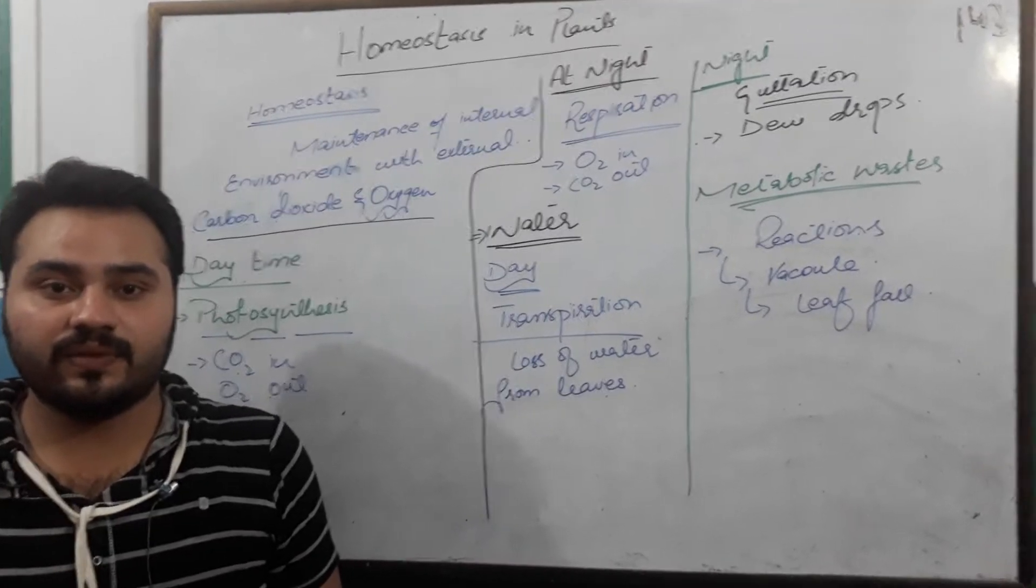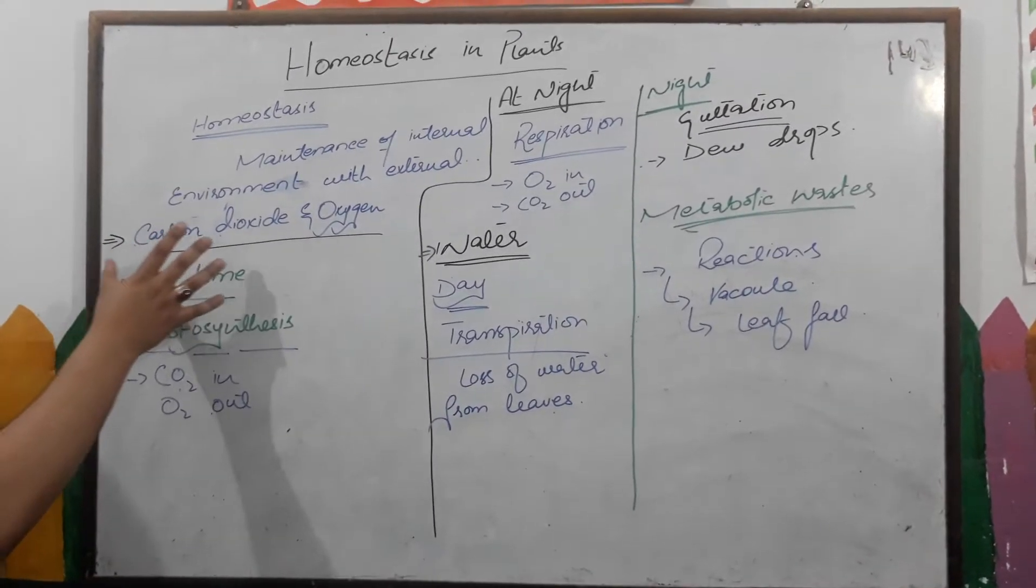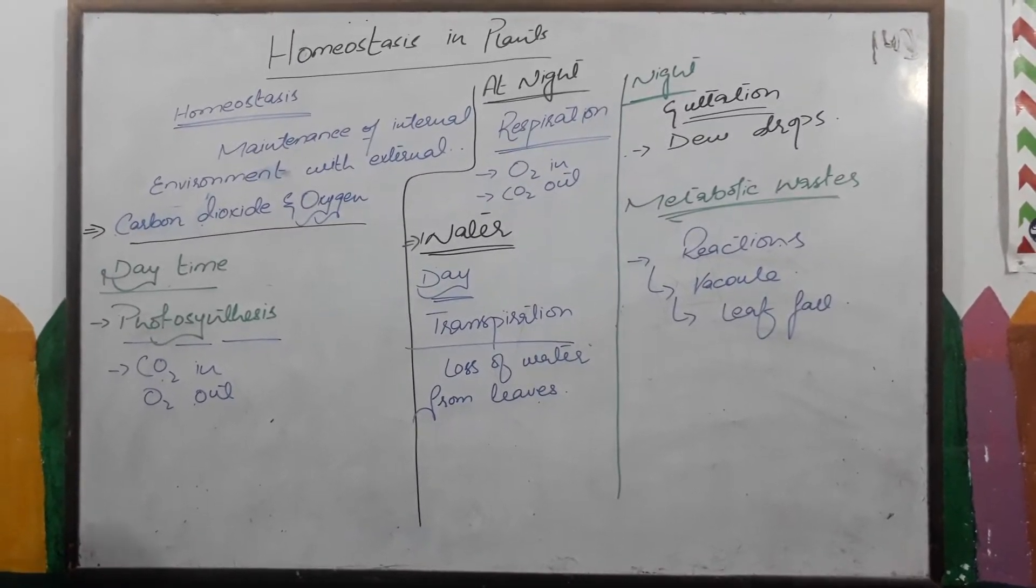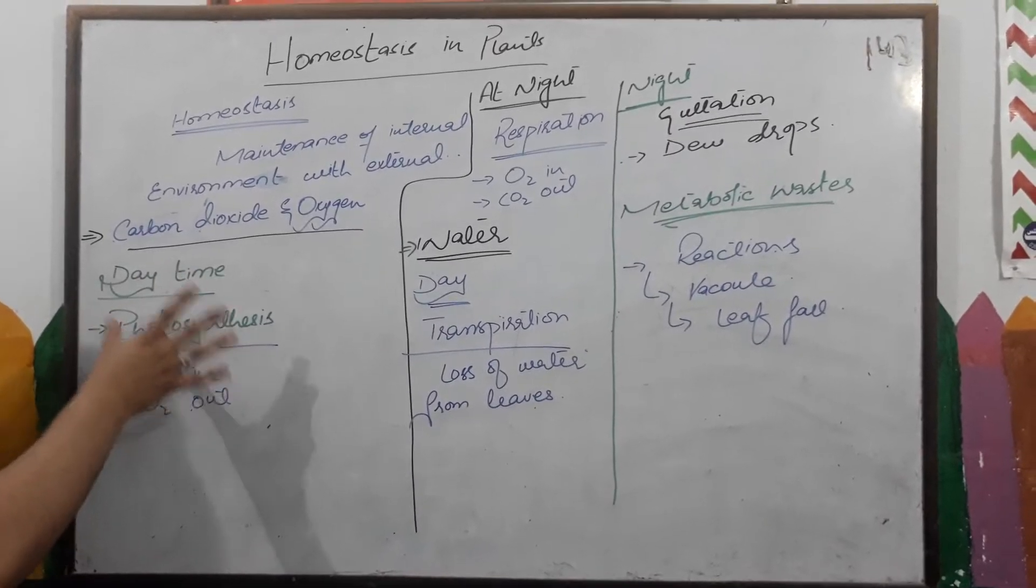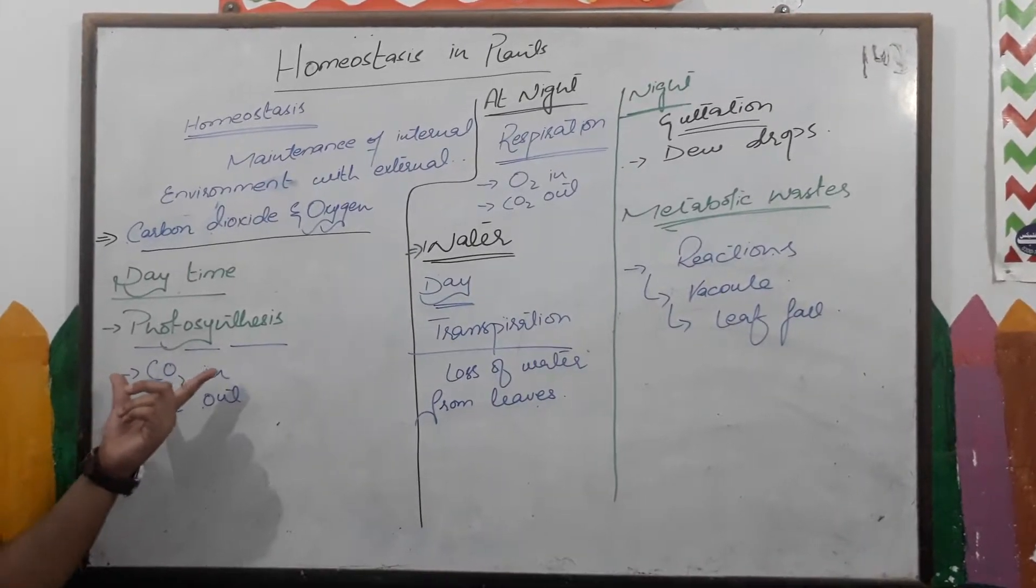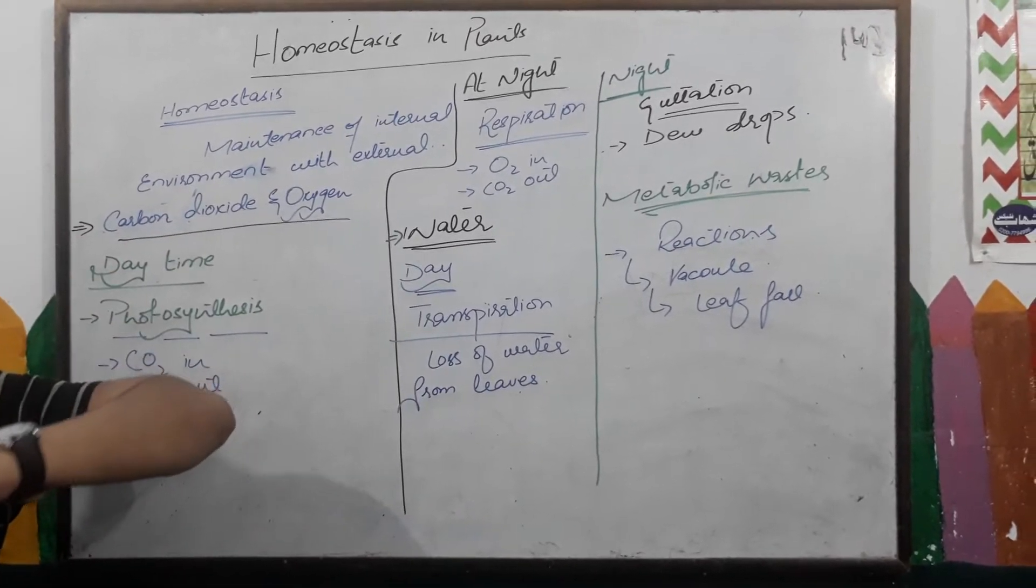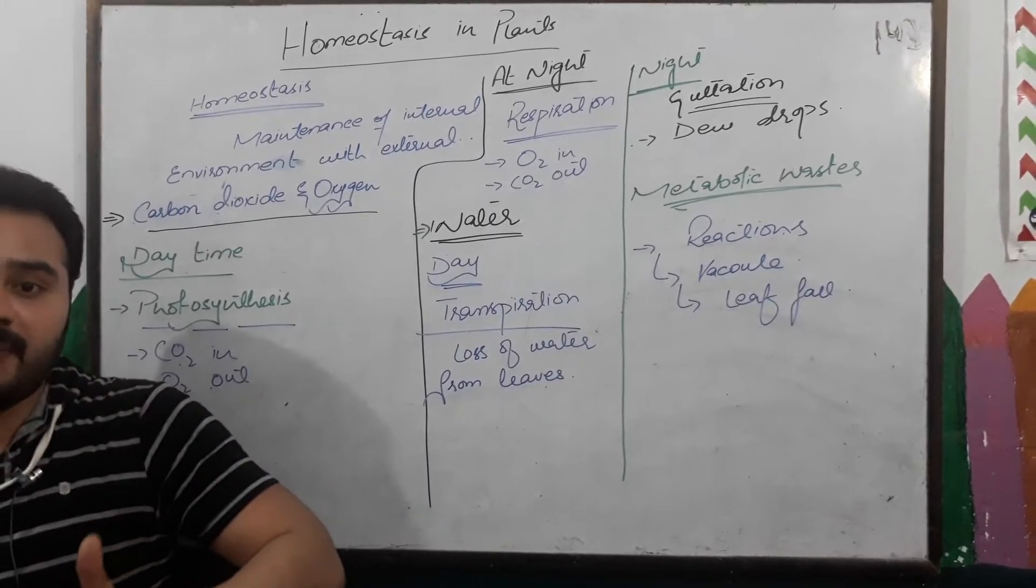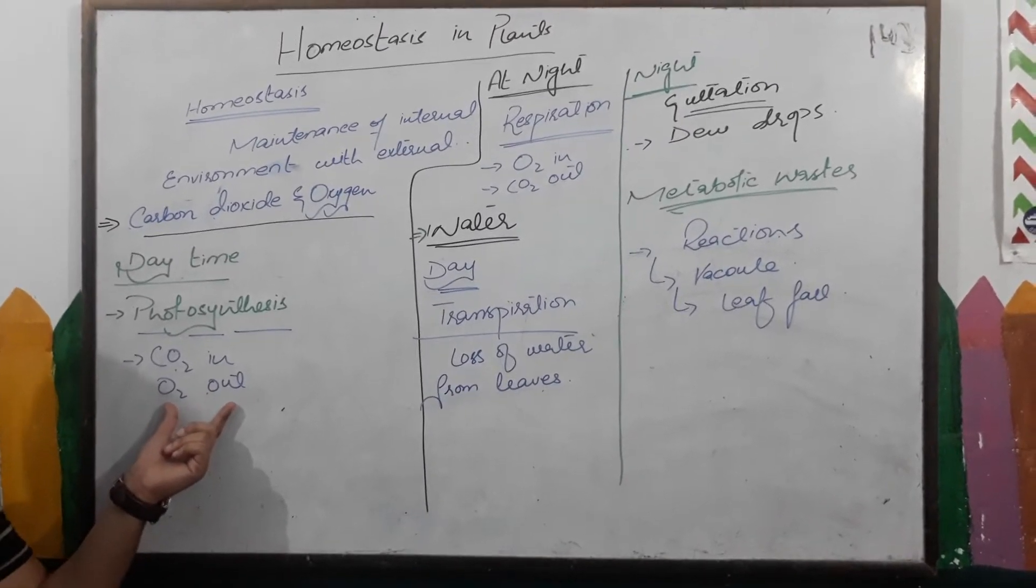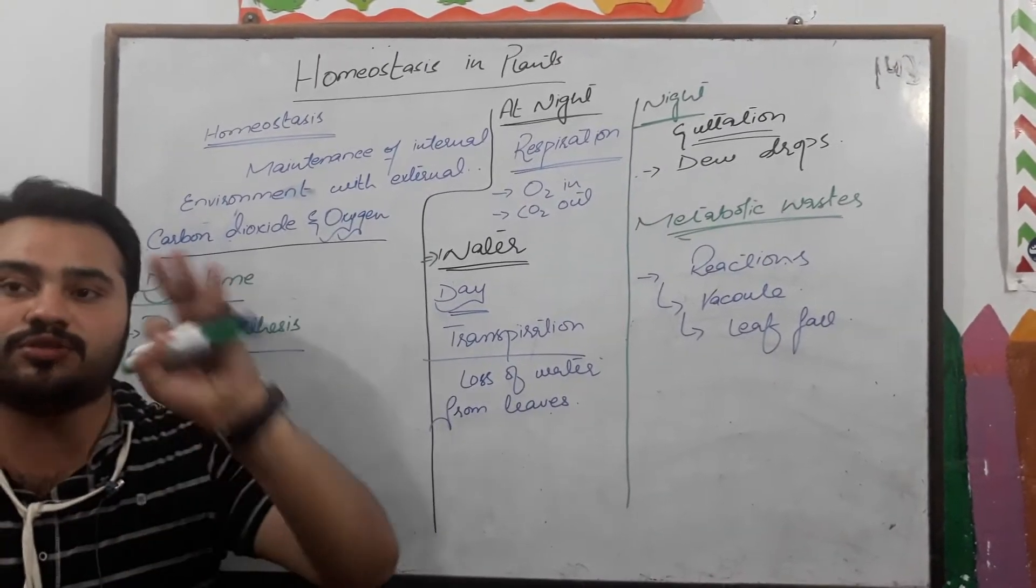So basically we have three phenomena that plants can do in homeostasis. The first one is carbon dioxide and oxygen. During the daytime, plants are doing photosynthesis. In photosynthesis, plants have a shortage of CO2 for making glucose, so plants can absorb CO2 from the environment. In return, plants make an abundance of oxygen. Some oxygen is used in respiration and the remaining oxygen plants expel out through stomata.